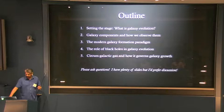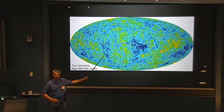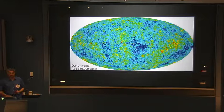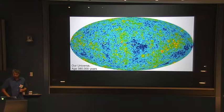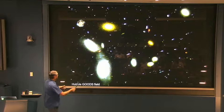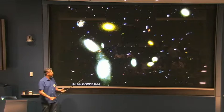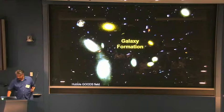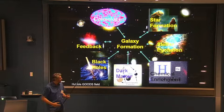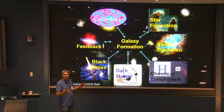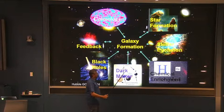So, galaxy formation — it's basically an initial condition problem. This is our initial condition, and people argue about the exact cosmological parameters, but as galaxy formation people we don't care. The uncertainties on cosmological parameters are such that galaxy formation uncertainties far outweigh that. This is the final state — when we go out and observe with Hubble, we see all these little blobby things that are highly nonlinear and very diverse. That's the whole problem of getting from A to B. That's galaxy formation.